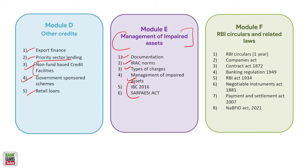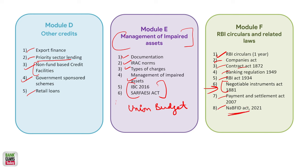In Management of Impaired Assets, we will cover IBC — including its amendments — and the SARFAESI Act, which are really, really important. RBI Circulars and Master Circulars for the last one year are very important. Union Budget should also be done. Companies Act, Contract Act, Banking Regulation Act, RBI Act, Negotiable Instrument Act, and Payment and Settlement Act are all very important for banking exams.